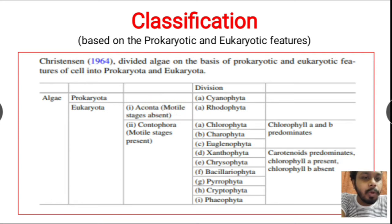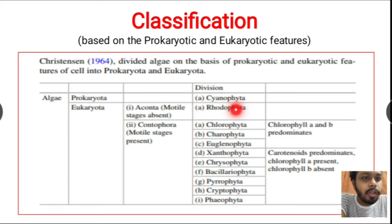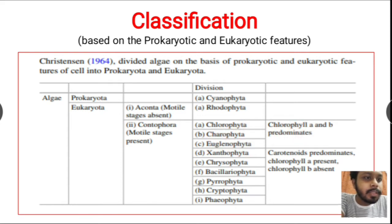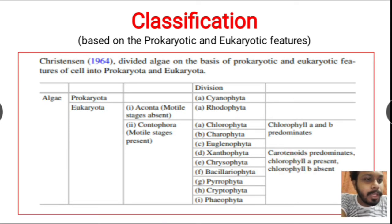Eukaryotic algae are further differentiated into two groups: non-motile and motile. Rhodophyceae or rhodophyta are eukaryotic algae that do not have flagella, so they are non-motile. The remaining algae are motile. Chlorophyta are eukaryotes with predominant chlorophyll a and chlorophyll b pigments, while the rest have predominant carotenoids as pigments and have chlorophyll a but no chlorophyll b.